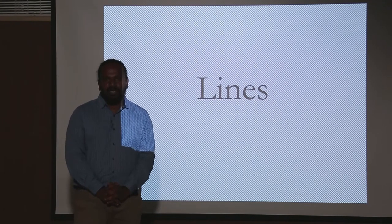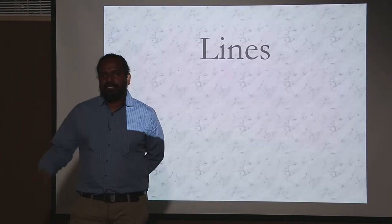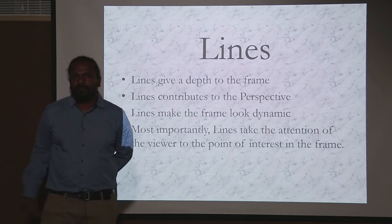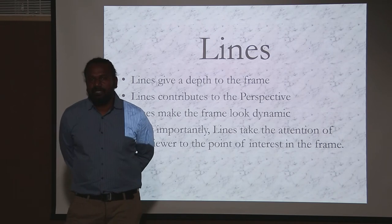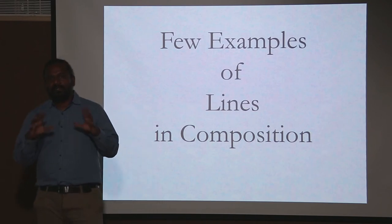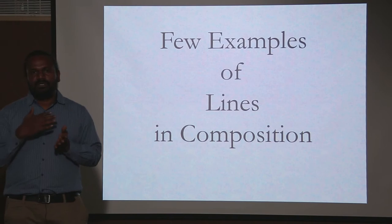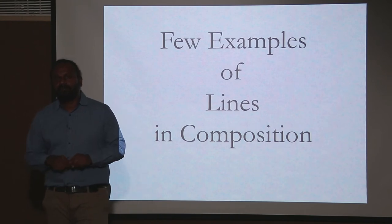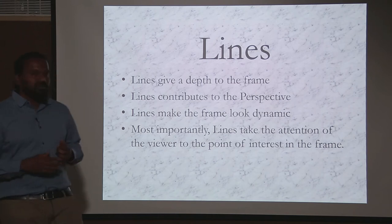Now we are going to look at another element of design which is probably the most important one and can be found easily — that is lines. Lines are just straight lines, but they do a lot of things to a particular frame. The first thing is lines give depth to the frame. Photography is about showing a three-dimensional image in a two-dimensional plane, and lines contribute to that depth, making the image look three-dimensional. Lines also contribute to perspective.